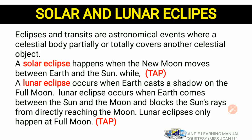A total eclipse means that the Moon is completely in between the Earth and the Sun. A partial eclipse means the Moon is only partially in between the Earth and the Sun. The second kind of eclipse is called lunar eclipse. Lunar eclipses occur when the Earth casts a shadow on the full Moon — meaning the Earth comes in between the Sun and the Moon, blocking the Sun's rays from directly reaching the Moon.